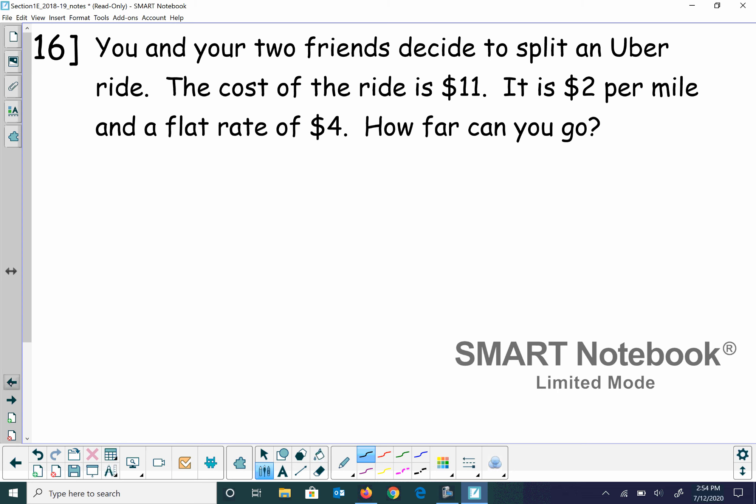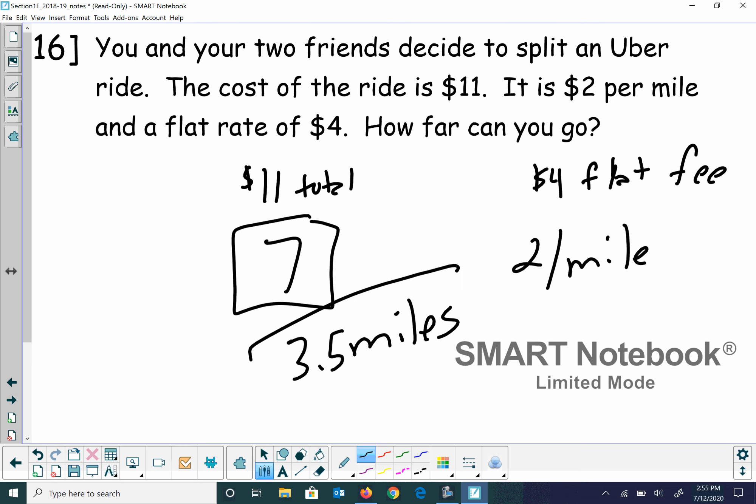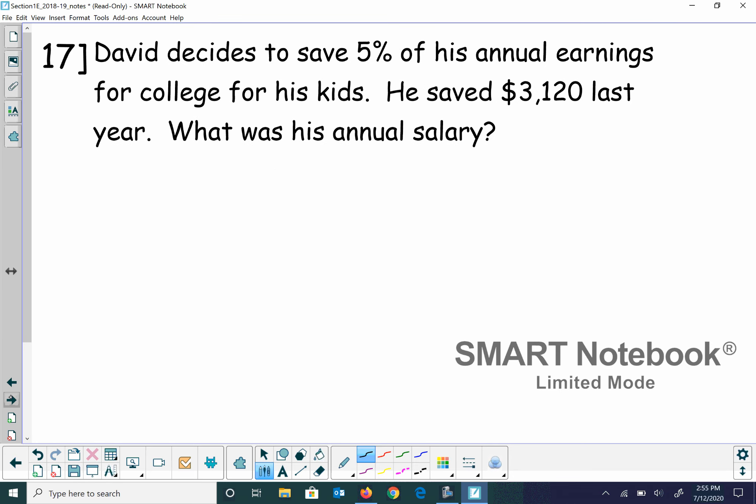Okay. You and your two friends, so you're talking about a total of three people, decided to split an Uber ride. The cost of the ride is $11 and $2 per mile and a flat rate of $4. How far can you go? So the cost of the ride is $11. So it was $11 total for your ride. You had to pay $4 right off. You know, that was a flat fee. That was for calling Uber. So that means that there was $7 that you were able to go as far as miles. And it cost you $2 per mile. So how far did you go? Well, you went 3.5 miles. I have no idea if that is a correct amount of mileage to go with an Uber or not, but based on this problem.